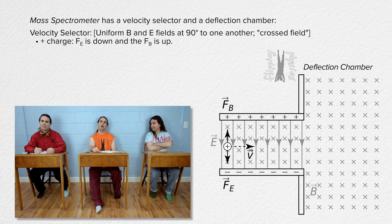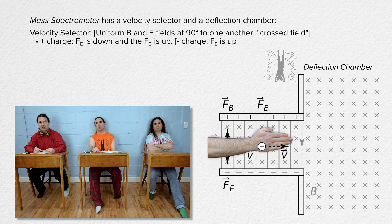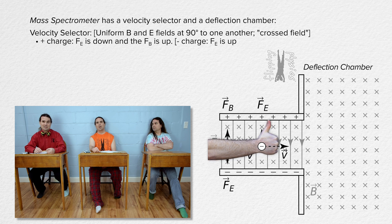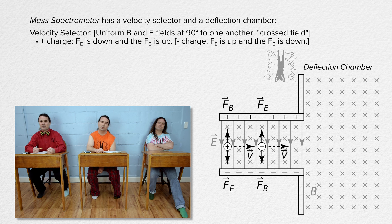What will the directions of those forces be if the charge instead has a negative charge? If the charge is negatively charged, the electric force will be opposite the direction of the electric field, which is upward. Using the right-hand rule again, velocity and fingers to the right, curl fingers into the screen with the magnetic field, thumb points up in the direction of the magnetic force of a positive charge. However, this is a negative charge, so the direction of the magnetic force is opposite the up direction, which is down. So a negative charge has the same forces acting on it as a positive charge, only the directions of the forces are switched.